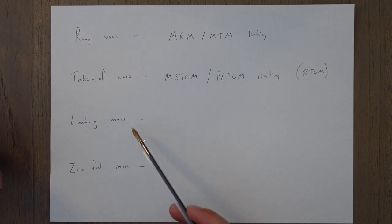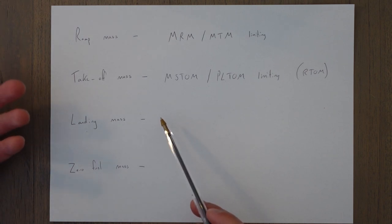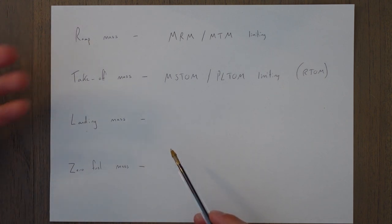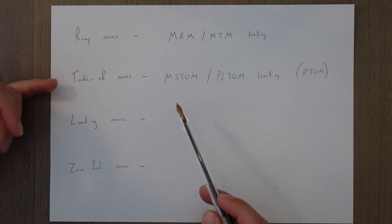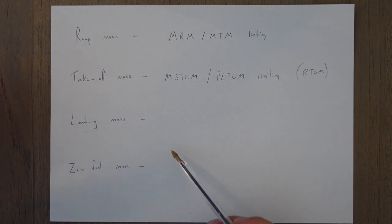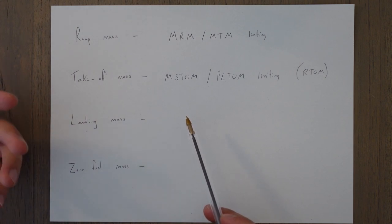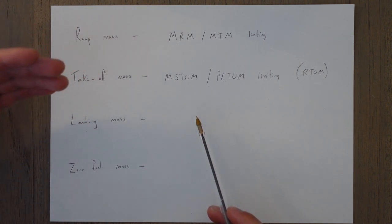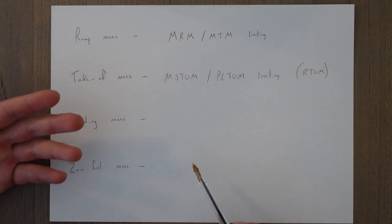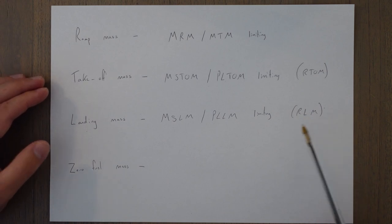The landing mass is the mass when we land — the takeoff mass minus any fuel burned getting there. It is limited by structural limits and performance limits, just like the takeoff mass. The maximum structural landing mass will often be lower than the structural takeoff mass, because the actual landing procedure puts a lot of strain on the wheels and tires — we basically can't handle as much weight pressing into the tarmac when landing. Just like takeoff mass, we take the lower of the two values and call it the regulated landing mass.